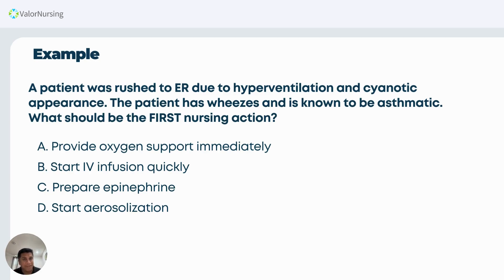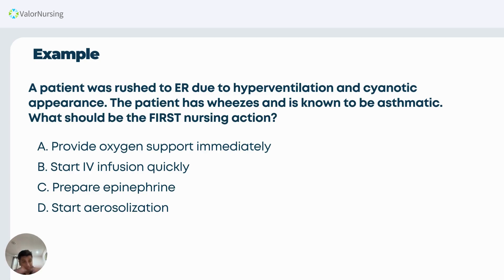So simply, one patient was brought to the ER because of hyperventilation and cyanosis. The patient has wheezes — those are your cues, meaning your signs and symptoms or markers that give us the real situation. There is hyperventilation, cyanosis, and wheezes, and the patient is a known asthmatic. The options are: A) provide oxygen support immediately, B) start IV infusion quickly, C) prepare epinephrine, D) start aerosolization. This is actually a level one question requiring both knowledge and critical thinking.